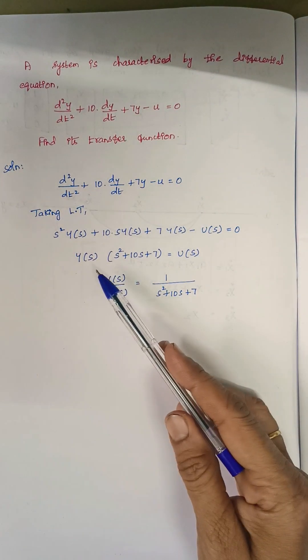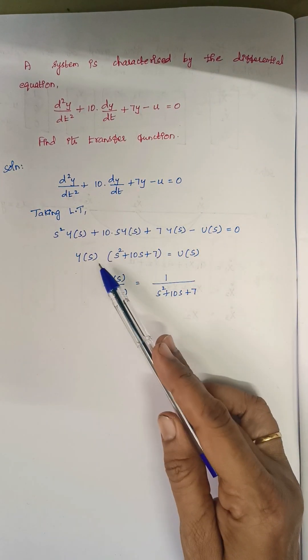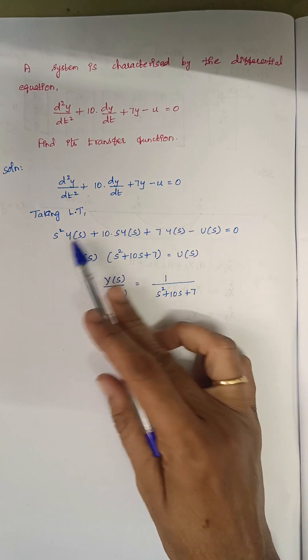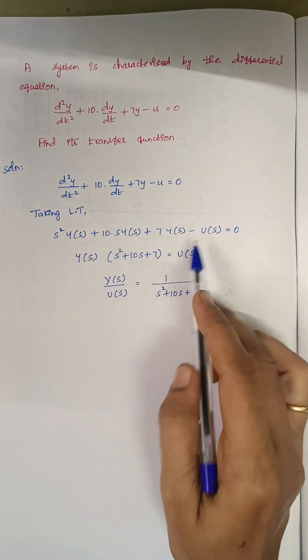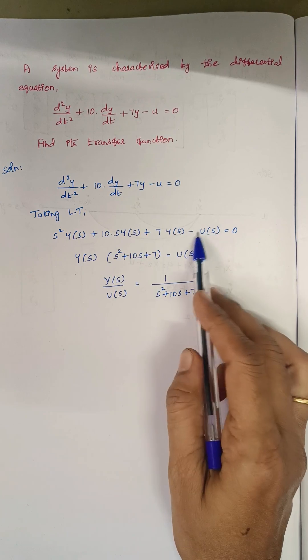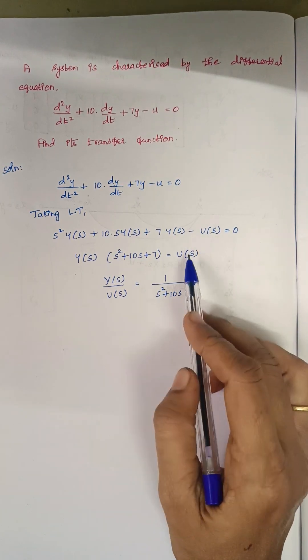So here in these terms we are taking y of s commonly outside. So the remaining terms will be here s squared plus 10 s plus 7 which is equal to, I am moving this u of s to the right hand side. So this minus becomes plus here.